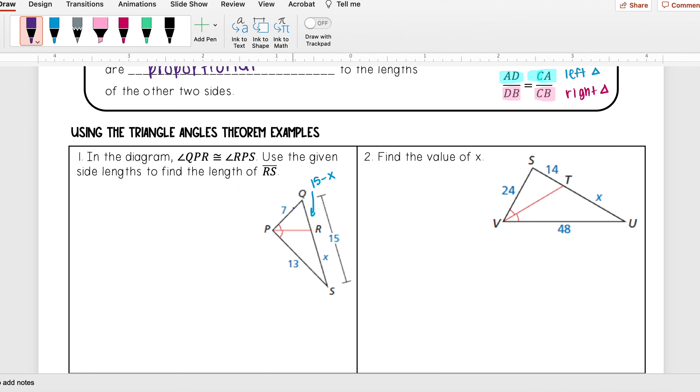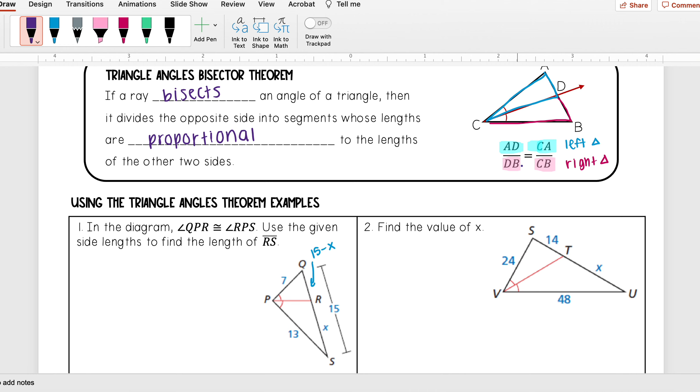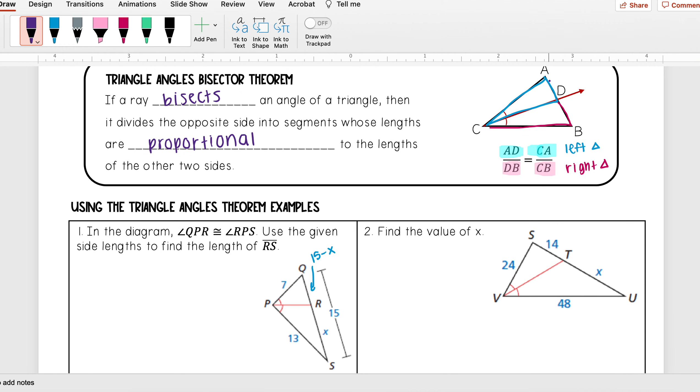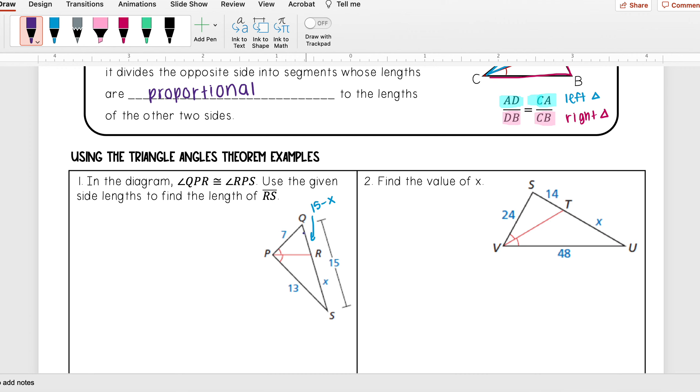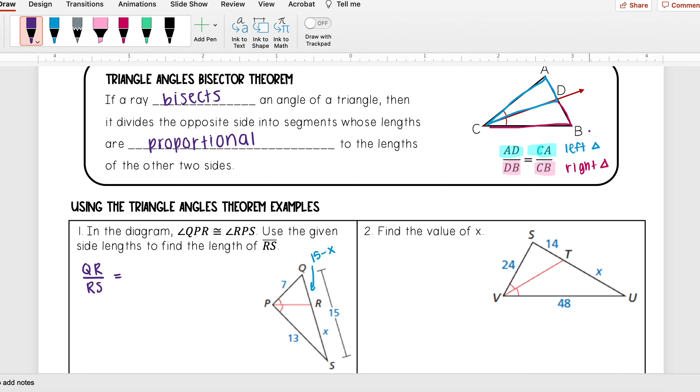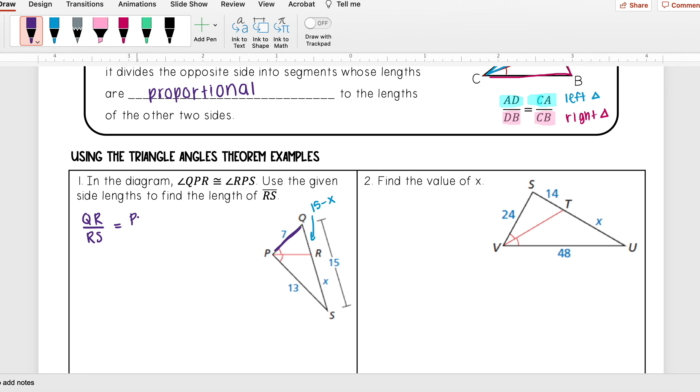And so now I can go ahead and set my proportion. So I know that from this theorem, the side that is being intersected, that's going to go on top of each other for a fraction. So I have QR over RS is equal to, and now I know that the next one that has to be on top has to be coming from the same triangle. So the same triangle with QR is going to be PQ, so PQ over, and again the same one with RS is PS.